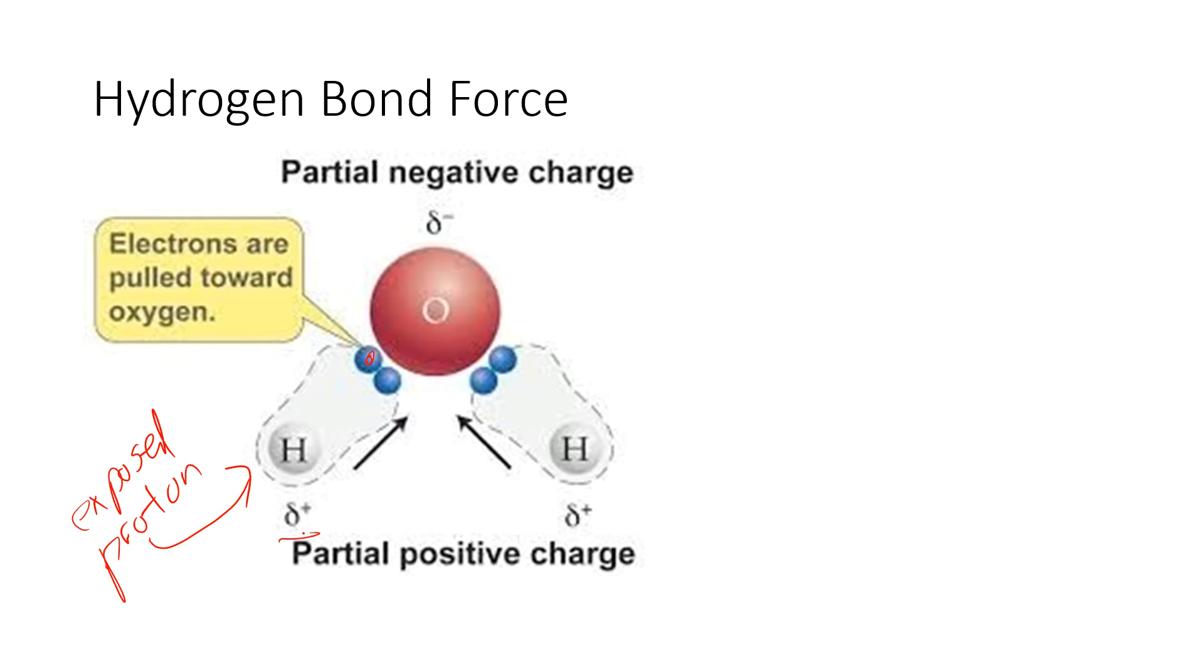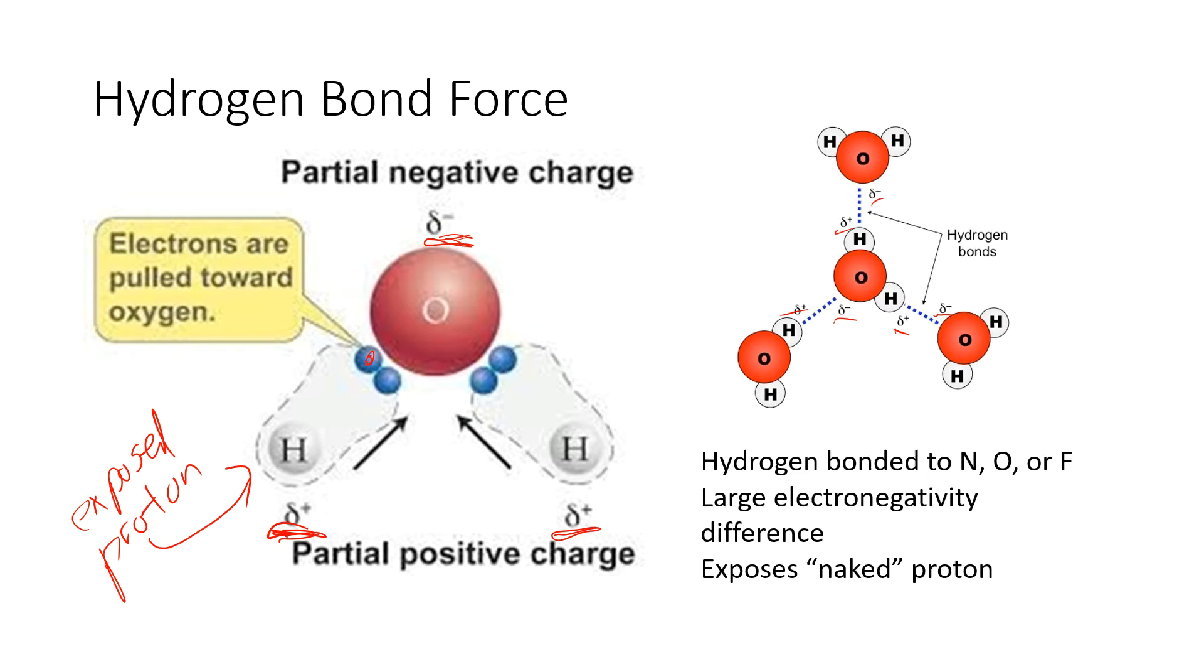And because of that, there's that partial positive charge. This is a negative charge. And this is the strongest of the intermolecular forces because there's no shielding on this proton. It's a very strong positive charge. And then coupled with that negative charge, there's an attraction, just like with ionic, magnetic type attraction between your positives and your negatives. And because of that, there's a stickiness. And that stickiness is most pronounced with hydrogen bond forces.